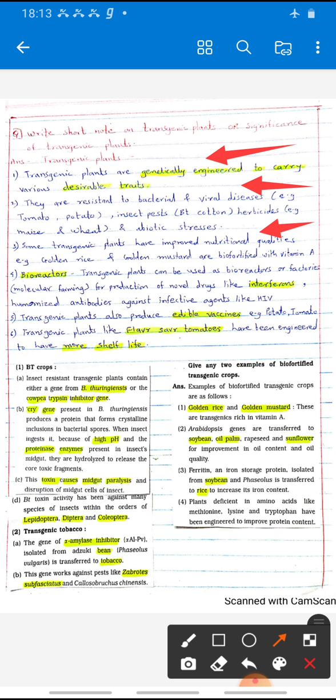Some transgenic plants have improved nutritional quality which are also called biofortified crops. Example: golden rice and golden mustard. They are biofortified with vitamin A, means they contain vitamin A.